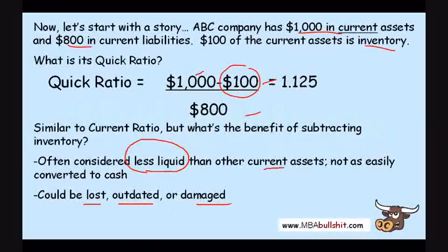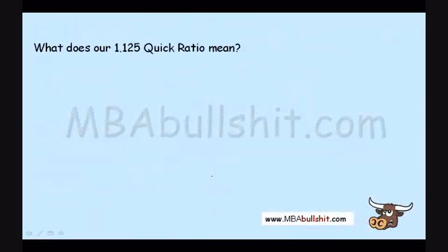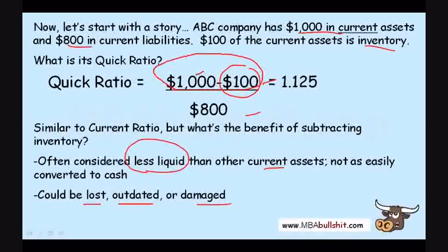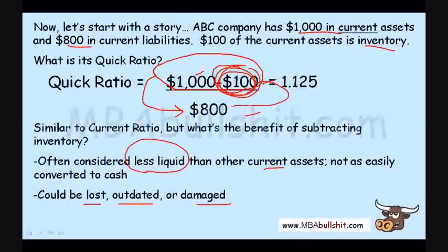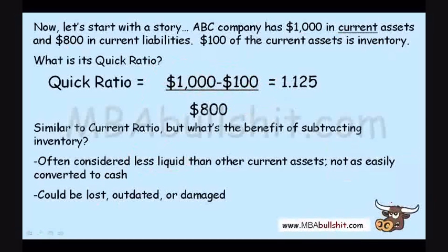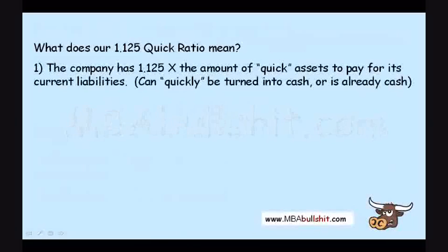You might think your inventory is in the warehouse and everything is great, but a lot of it could be damaged. That's why we subtract inventory. The objective is to see how much in current assets you have to pay for your current liabilities, excluding inventory since it cannot easily be used to pay those liabilities. So we end up with a quick ratio of 1.125.